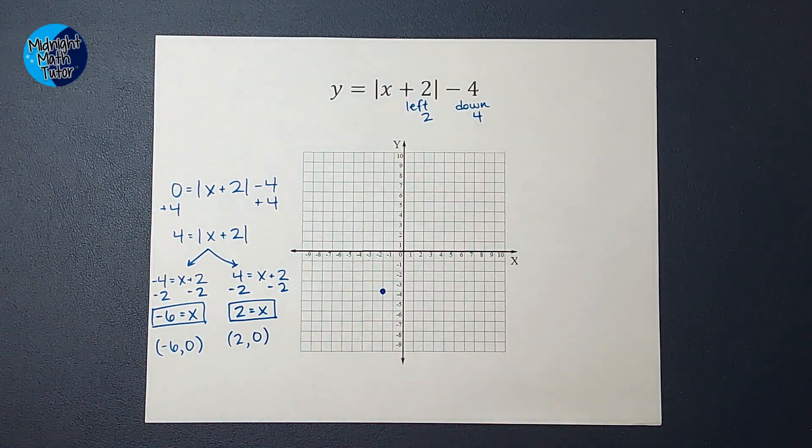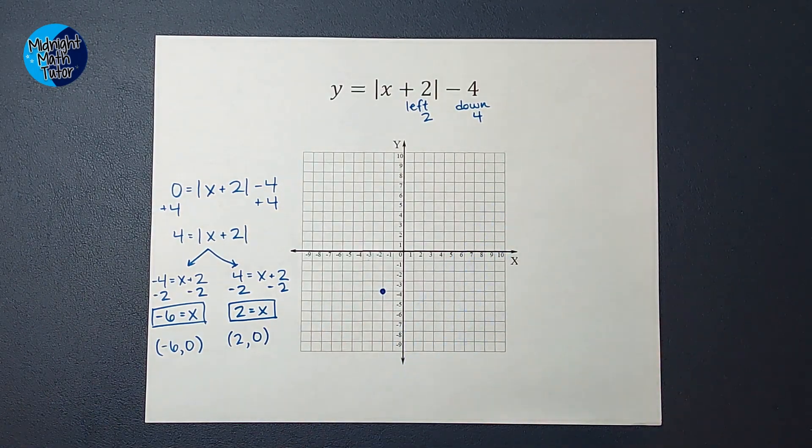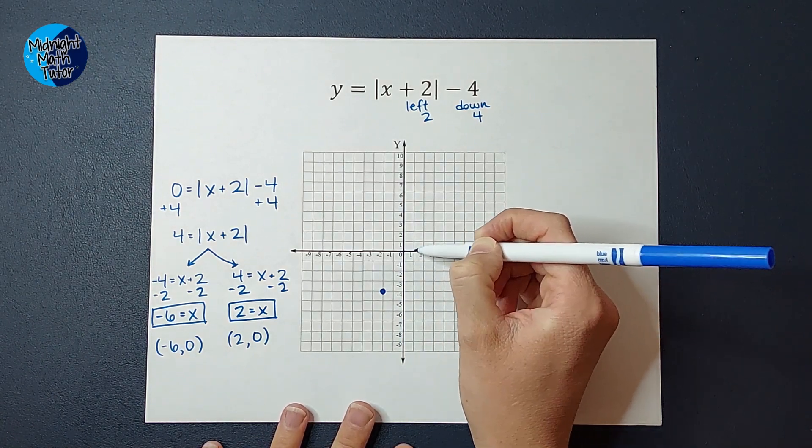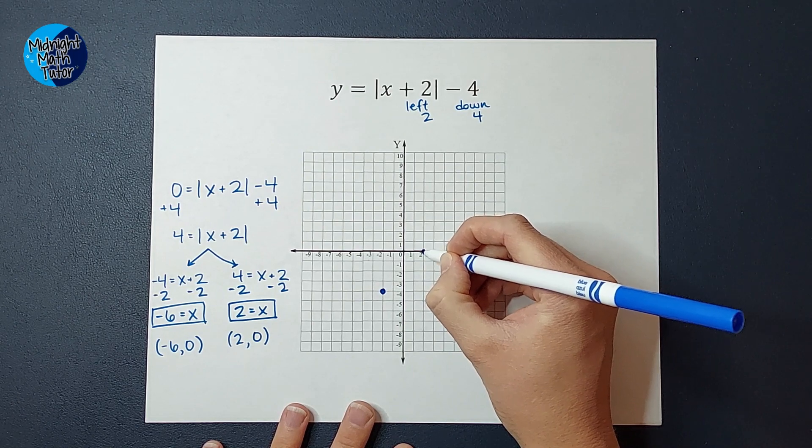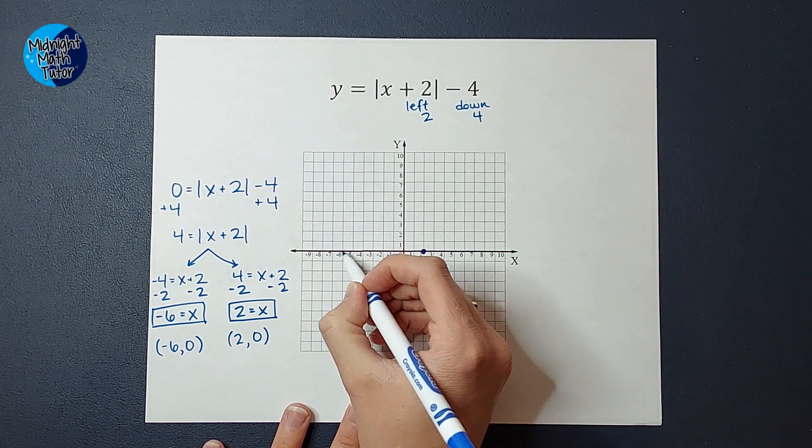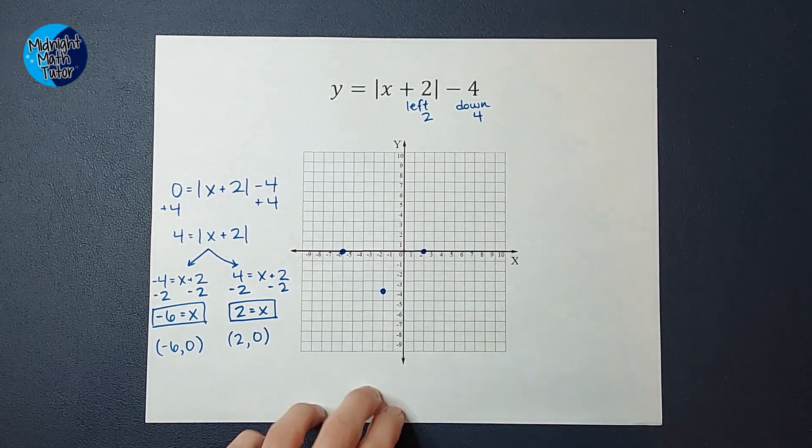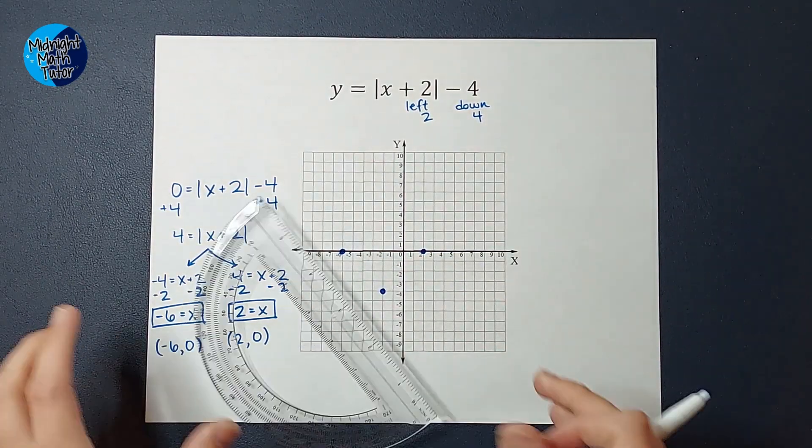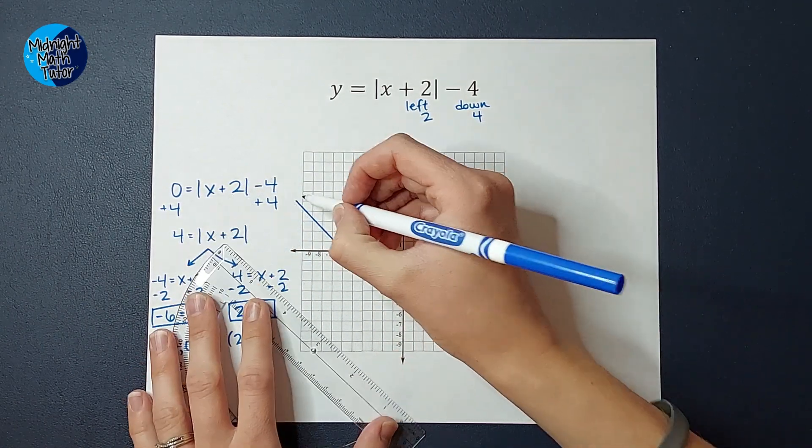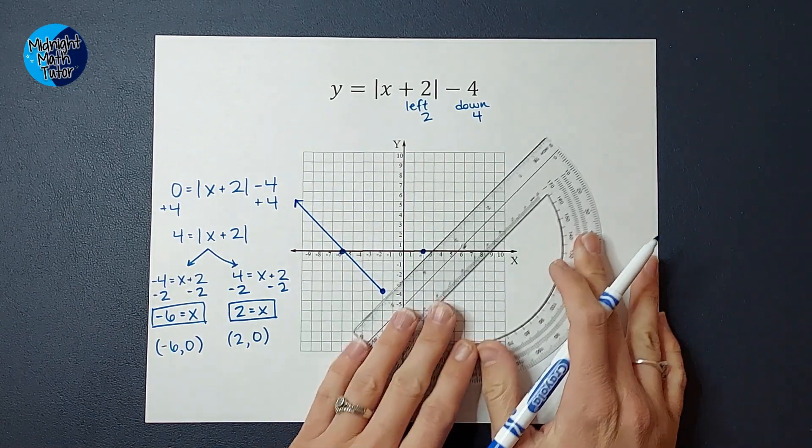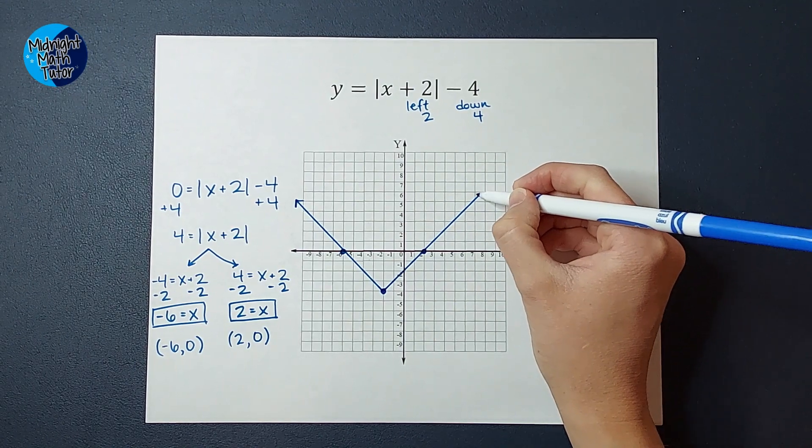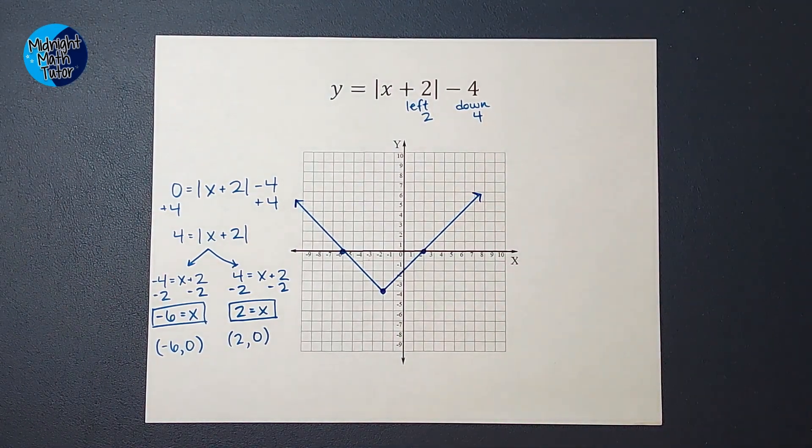If you're like, I don't get that absolute value thing she just did, go ahead and click that video I linked earlier. But here we're going to graph these points. So I've got two zero. So over two, up and down, none. So I've got a point right there. And then I've got negative six, zero. So see that? We got two answers. Now we're going to make our V. It looks a little something like this. There's our graph.